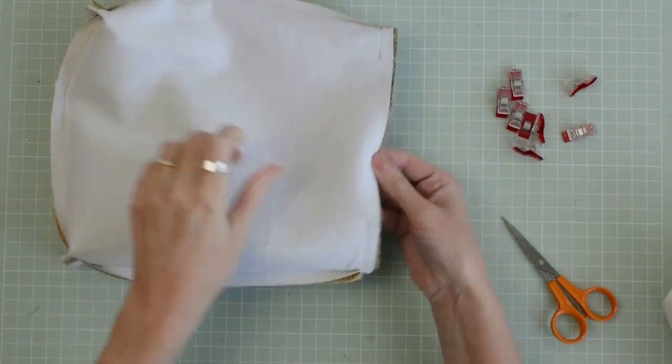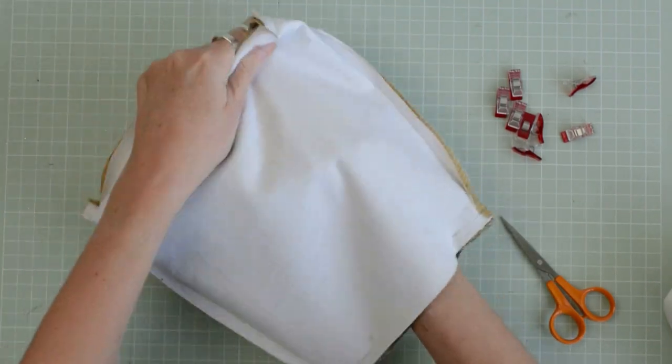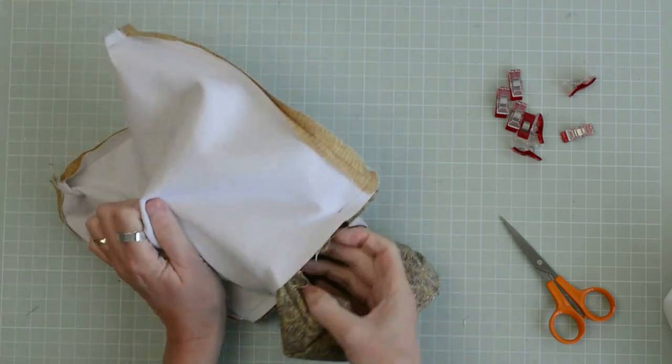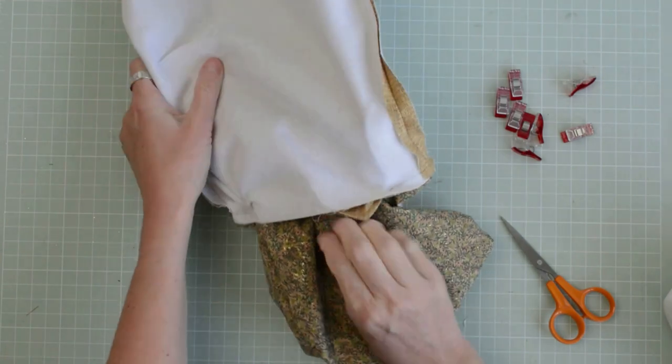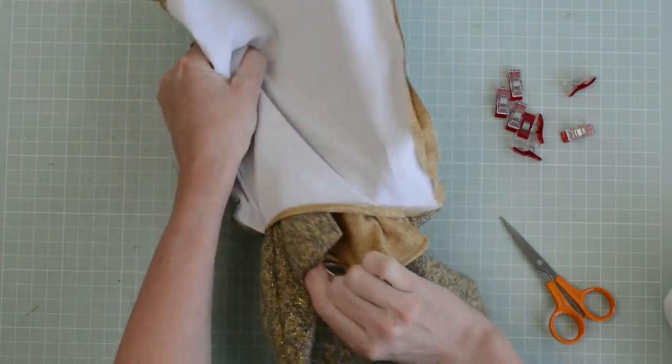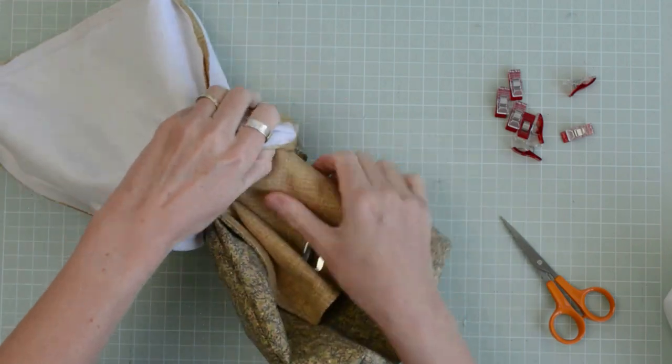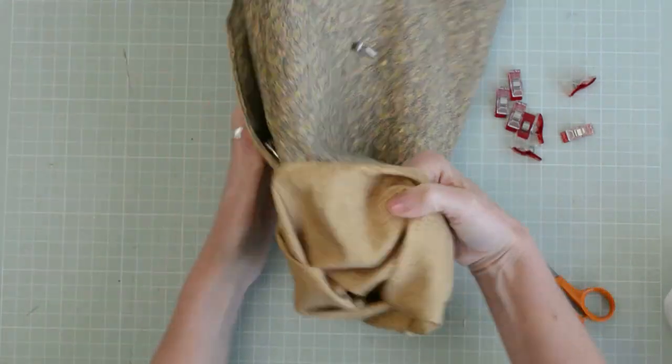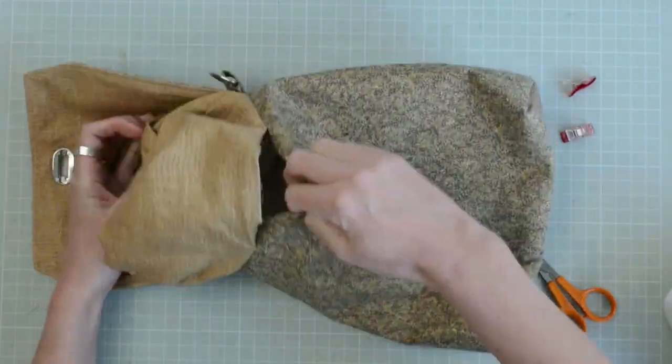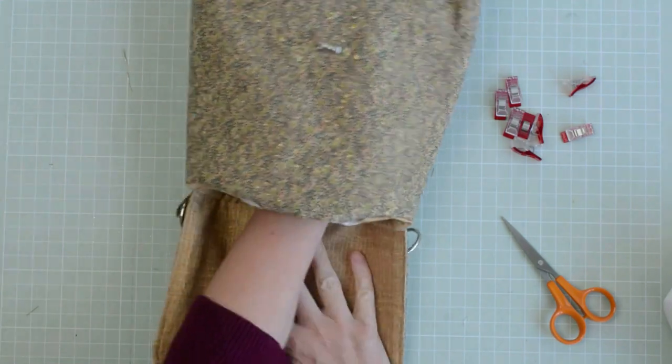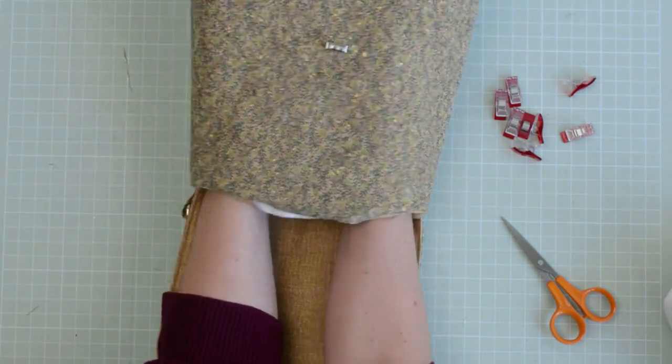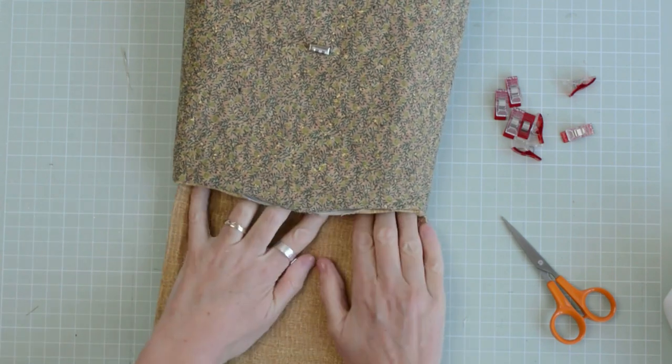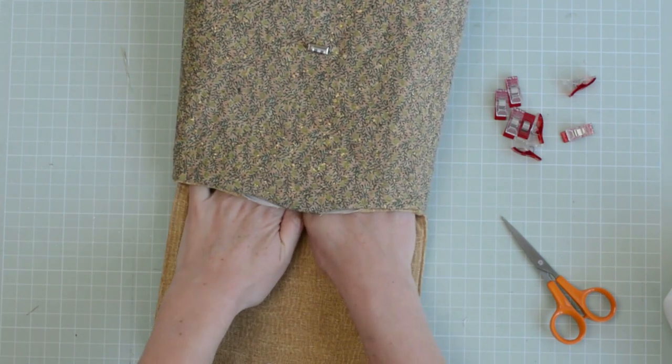So now we're going to pull through. Bit of a wriggle. But pull your cork out. It's coming through. Here's my closing flap. Right, turn the lining out. I'm going to push that into the bag. Push out the corners at the bottom. Push the lining right in.